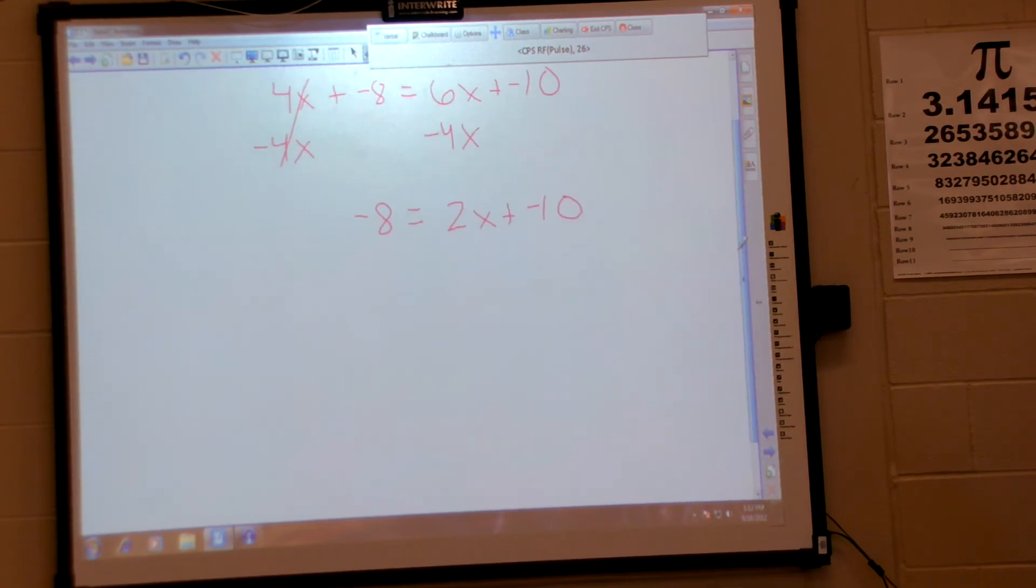Now from this point, I'm going to error diagram. Times 2 plus negative 10 is negative 8.